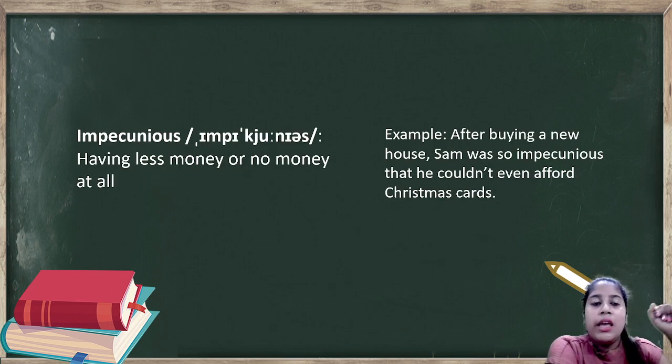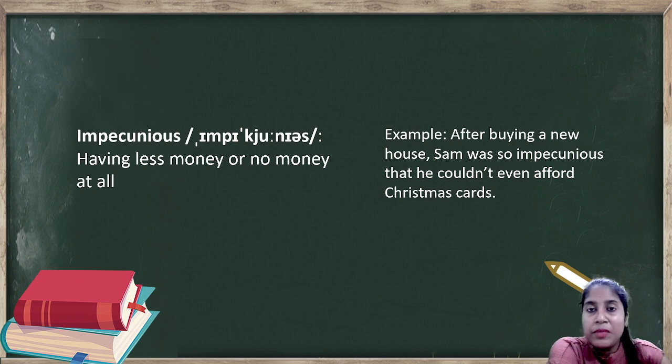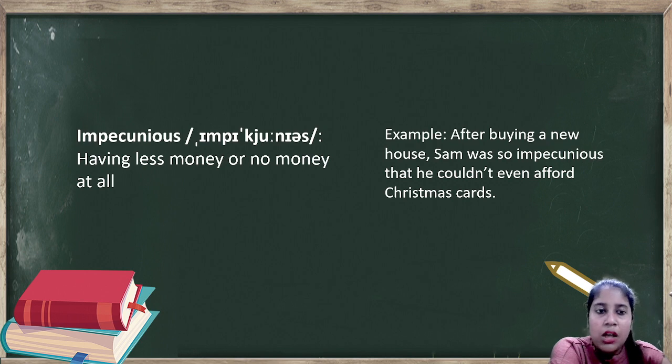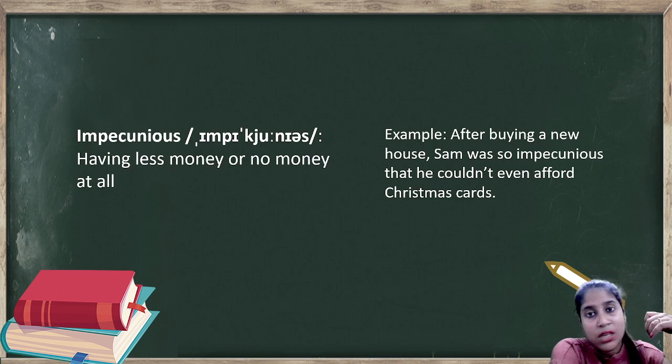Impecunious. Impecunious means having less money or no money at all. Having little money or no money at all is called impecunious. P-E-C, PEC, means something that is related to money. This is a root word which means money. So impecunious means having very little money or no money at all. Example: After buying a new house, Sam was so impecunious that he couldn't even afford Christmas cards.